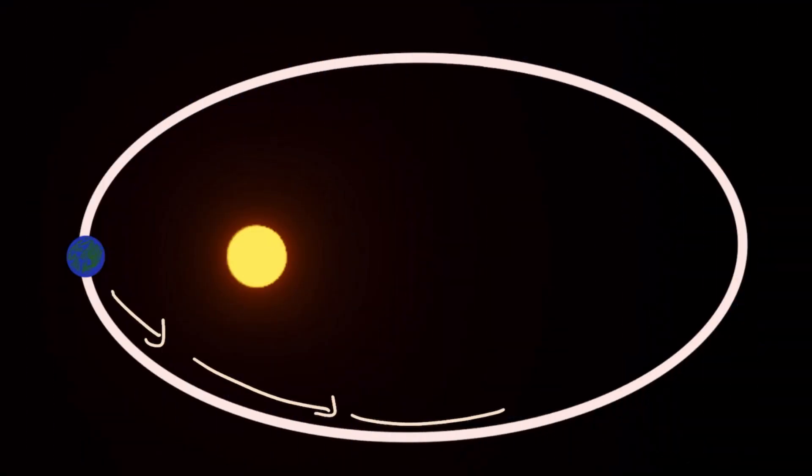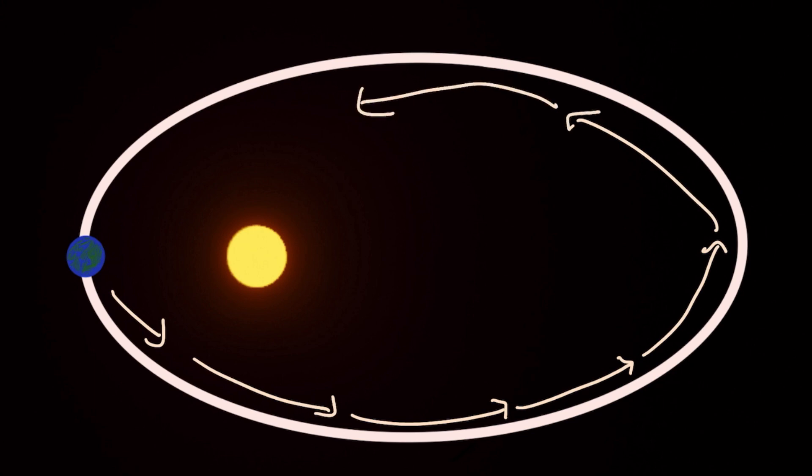Now let us move on to Kepler's third law of planetary motion. To understand this law, we need to know that the time needed for a planet to make a complete revolution around the Sun is called its orbital period.